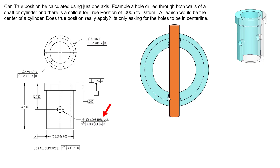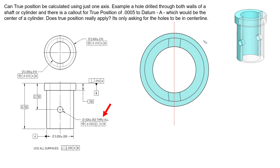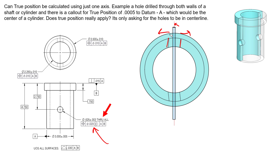Picture a cylindrical envelope expanding outward inside both walls simultaneously — that is the UAME for this one continuous feature. Regardless of orientation deviations in either cylinder wall, we use this UAME to establish the axis of the feature. The center of that expanding envelope becomes the axis of the feature. That axis must then reside inside a diametric tolerance zone of 0.020 relative to datum A — the blue tolerance zone centered dead on datum axis A.